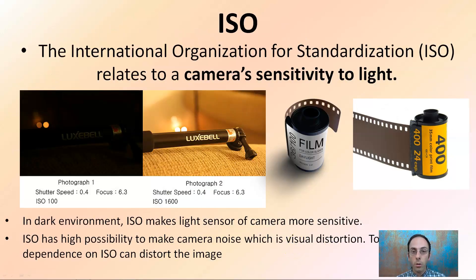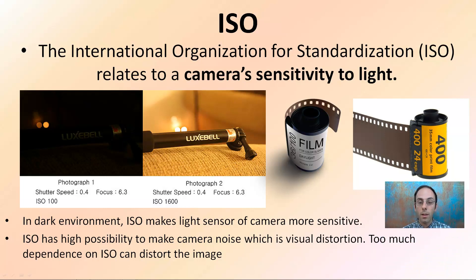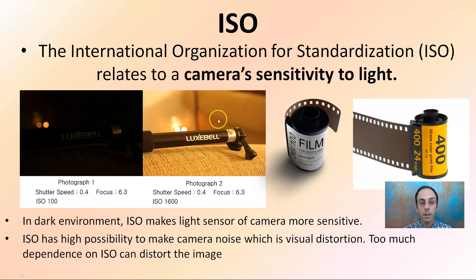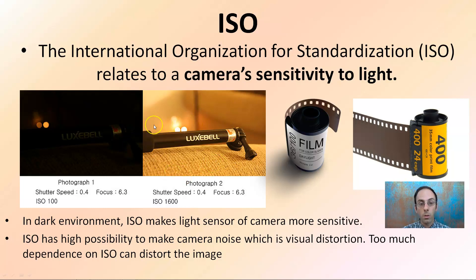ISO stands for International Organization for Standardization and relates the camera's sensitivity to light. Back in the days of film, they were sold in different ISOs. Here we have photograph one versus photograph two — same shutter speed, same focus, but different ISO. An ISO of 100 makes the object barely visible; at 1600 it's very clear. In dark environments, increasing the ISO makes the camera's light sensor more sensitive. However, high ISO has a high possibility of creating camera noise — blurriness and visual distortion — so use as low an ISO as possible to avoid that.